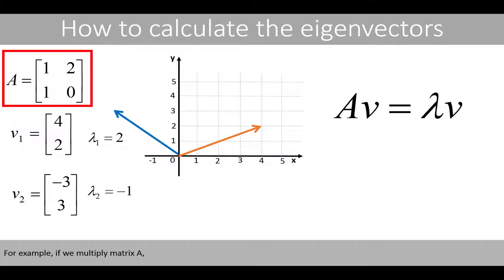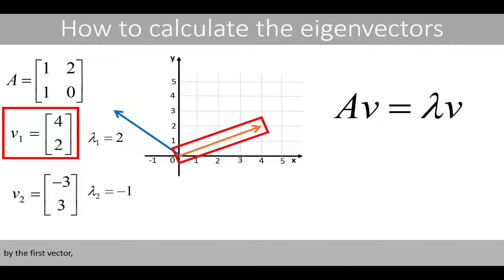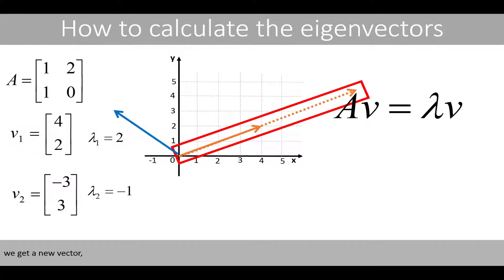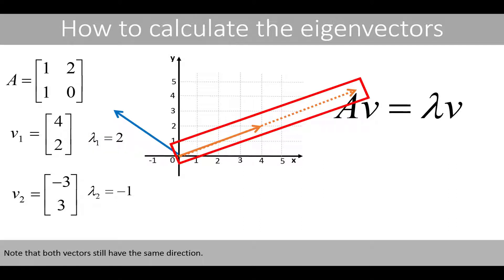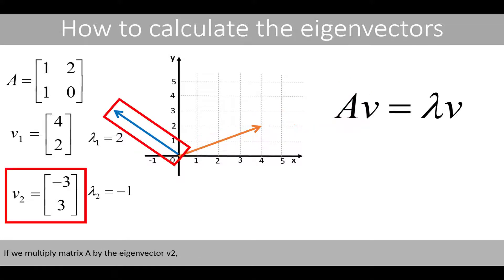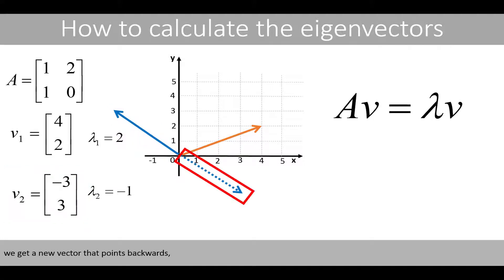For example, if we multiply matrix A by the first vector, we get a new vector that is two times longer than the original vector. Note that both vectors still have the same direction. If we multiply matrix A by the eigenvector V2, we get a new vector that points backwards.